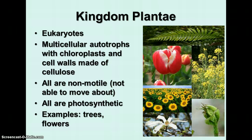Kingdom Plantae are also eukaryotes, defined as multicellular autotrophs with chloroplasts and cell walls made of cellulose. All members of kingdom Plantae are non-motile — they can't pick up and move from one place to another. All members of kingdom Plantae are photosynthetic. Examples include trees, flowers, grass, and any kind of plant you normally come in contact with.